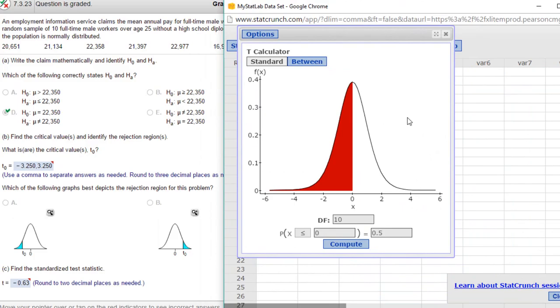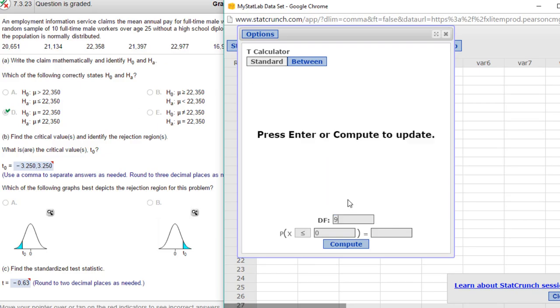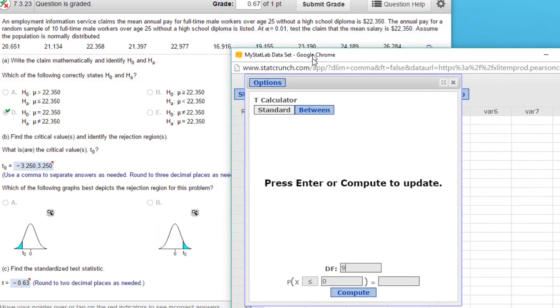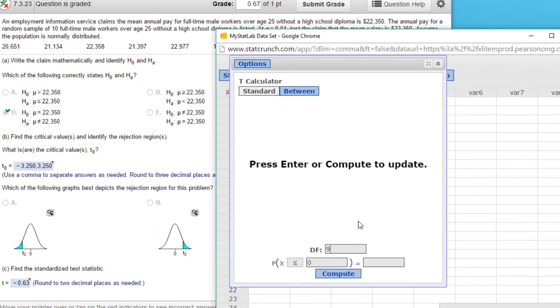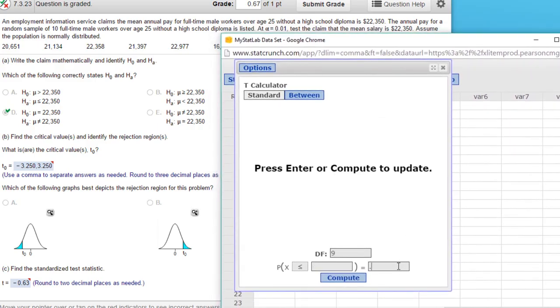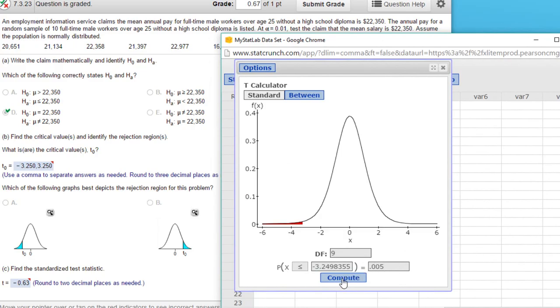We get this calculator. We want to use the standard because we're not doing a between and we're trying to find the critical value of T. The degrees of freedom is equal to N minus 1. We've got 10 values in the sample, so that's N. So our degrees of freedom is 9. The alpha is 0.01. Because we have a two-tailed test, that means each tail has half of 0.01 or 0.005. And we'll click on Compute.